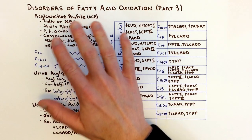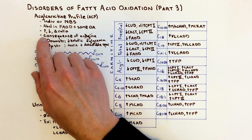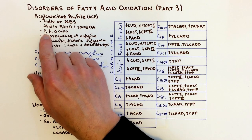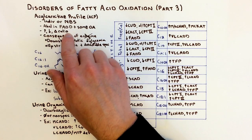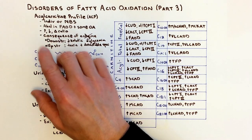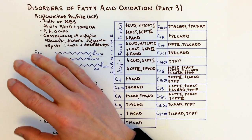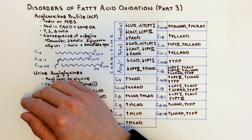The acylcarnitines in the fatty acid oxidation disorders could be increased in terms of specific acylcarnitine species, could be decreased, or you could have an altered ratio. That's what the acylcarnitine profile looks at in order to distinguish which disorder you're dealing with.